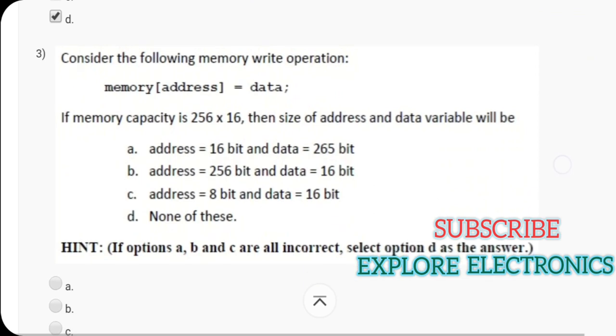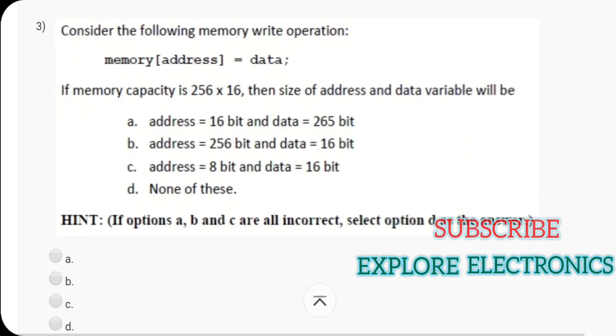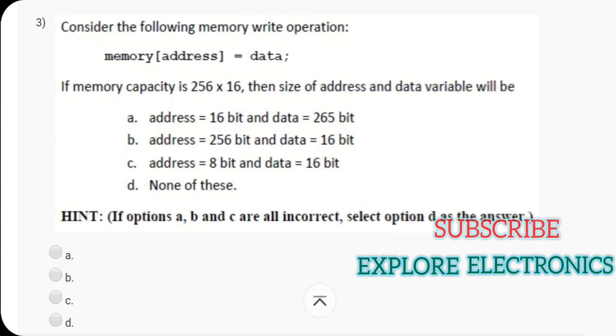And then considering the following memory write operation, memory of address is equal to data. Here if memory capacity is 256 cross 16 then size of address and data variable will be what? Here the correct answer is C. Since 256 cross 16 is the size of the memory, address is 8 bit and the data is 16 bit. 16 bit data in 256 locations, to represent 256 locations 8 bit is sufficient. That is why C is the answer.